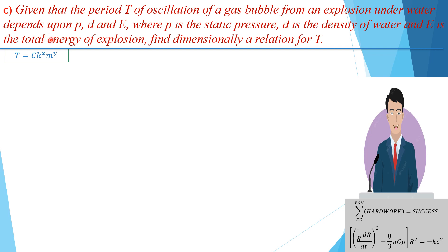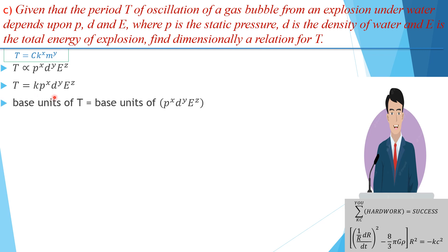For our problem, since the period T depends on p, d, and E, we write T = k · p^x · d^y · E^z, where the powers x, y, z are the values that make the equation homogeneous. We introduce an equality sign and a dimensionless constant of proportionality k — because homogeneity alone is not a sufficient condition for correctness, so k ensures the equation is physically correct. Now if this equation is homogeneous, the base unit of the left-hand side must equal the base unit of the right-hand side. The base unit of T is seconds to the power one. k is dimensionless, so its unit is one. The base unit of p (static pressure) is kg·m⁻¹·s⁻², raised to the power x.